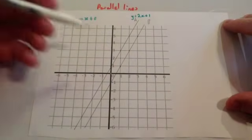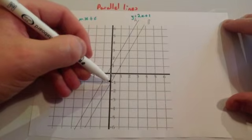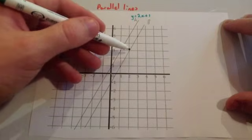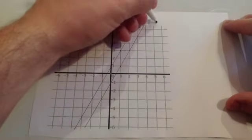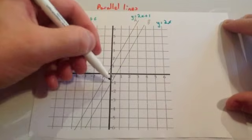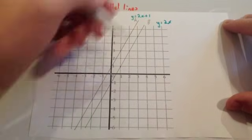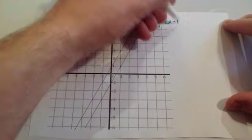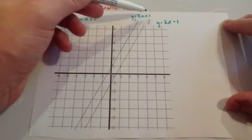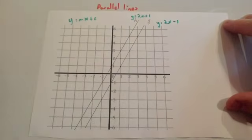Let's look at line B. Let's work out its gradient. If I choose this point, I go across one, I go up two — go across one, go up two. So again it's Y equals 2X, but this time it crosses at minus one on the Y-axis, so the Y-intercept is minus one. So A has got an equation of Y equals 2X plus one, and B has got an equation of Y equals 2X minus one.